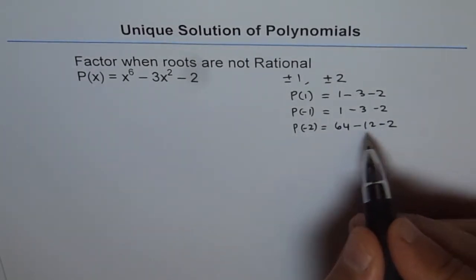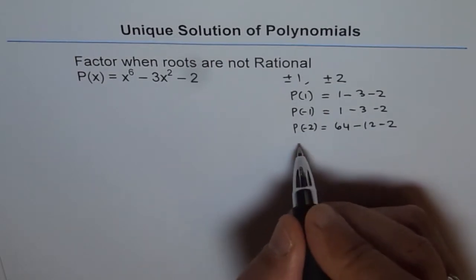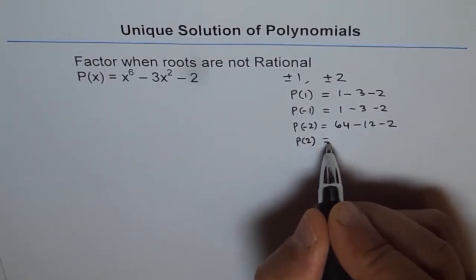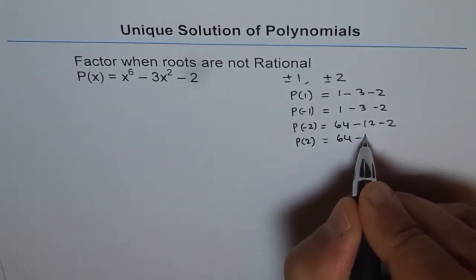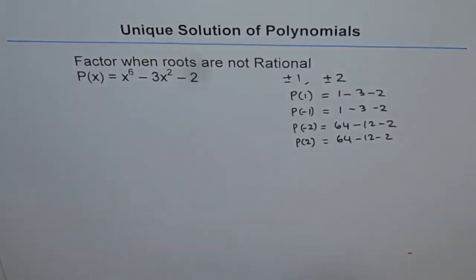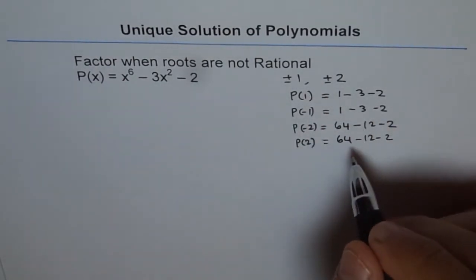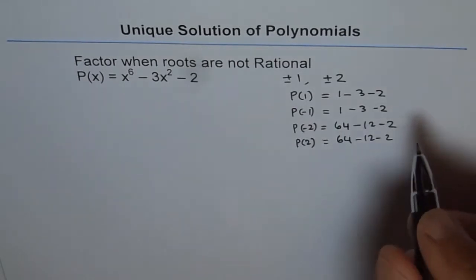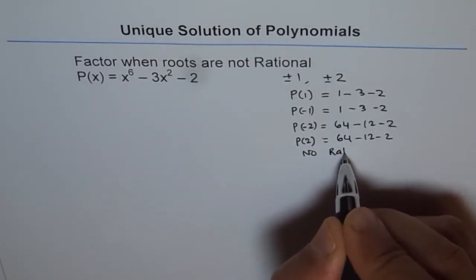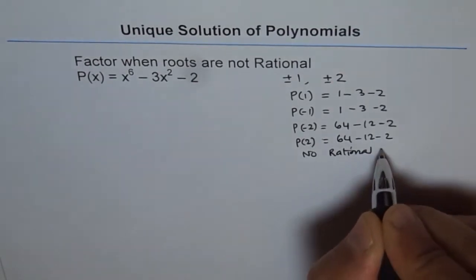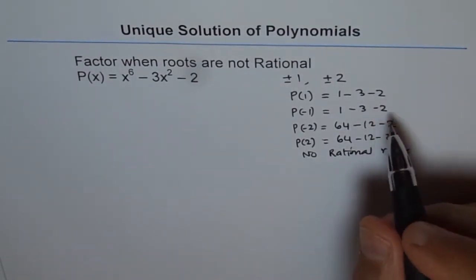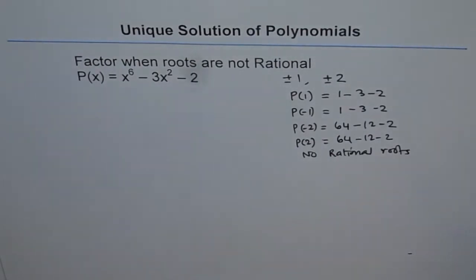p(2) gives the same result because of the even powers — 64 minus 12 minus 2. So none of them is 0, therefore we do not have any rational roots for this polynomial. If one of them had been 0, we could have divided and factored the polynomial, but we can't do that here.